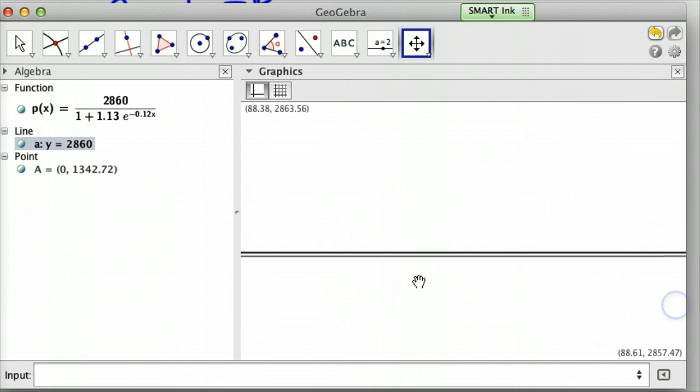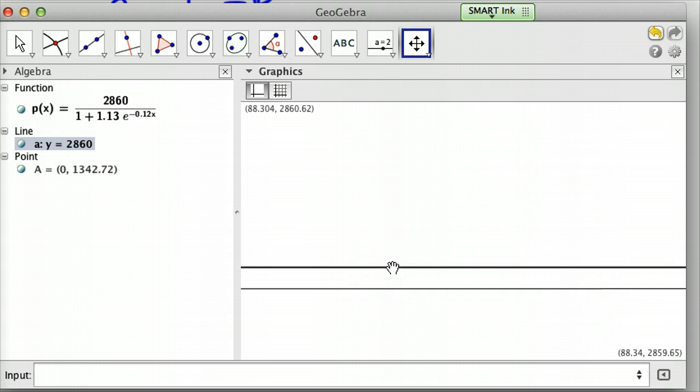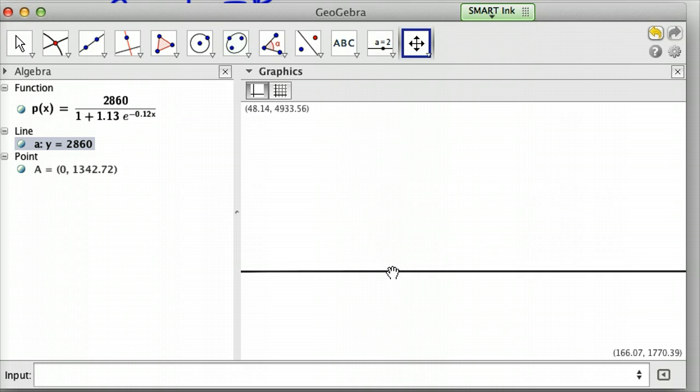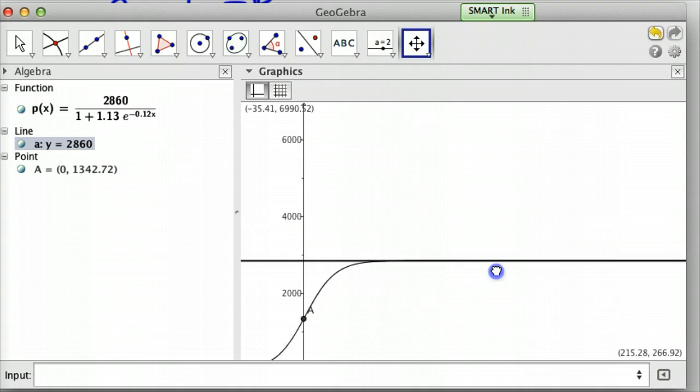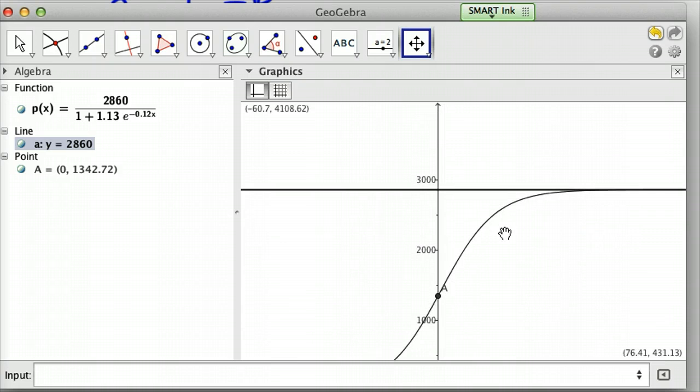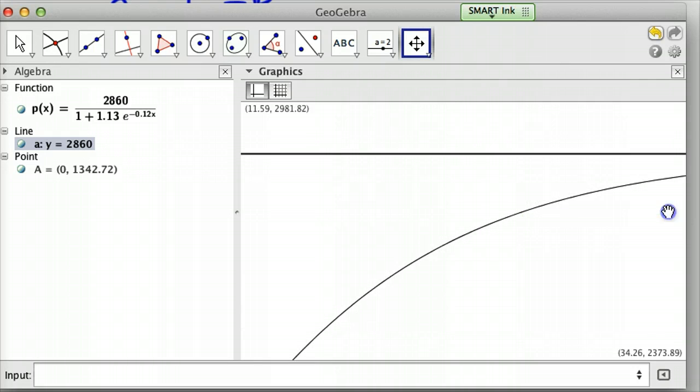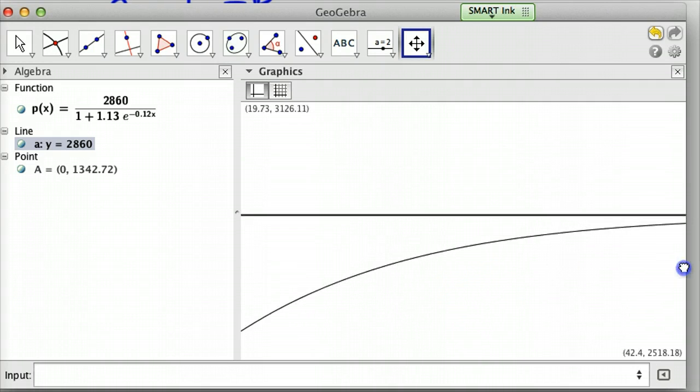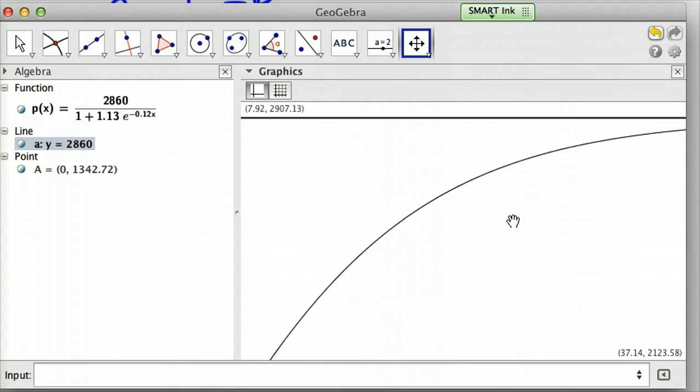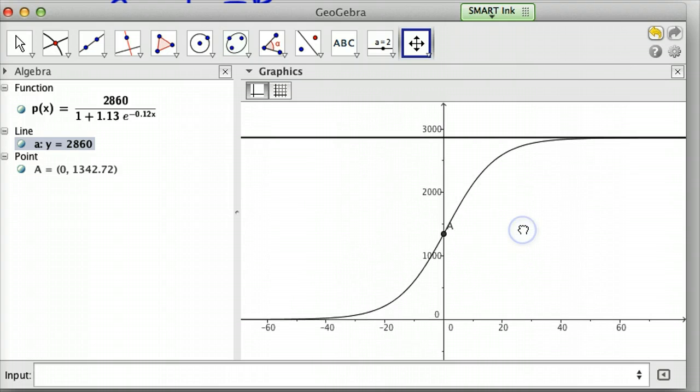So that just kind of shows you how that works. There we go. And so, kind of what a logistics function looks like. You don't see these very often. But you can see that asymptote. And the C is the 2,860 max population for the horses. So I hope that helps you understand logistic functions better. That's it. Good luck. See you next time.